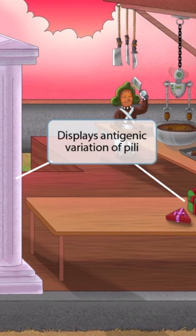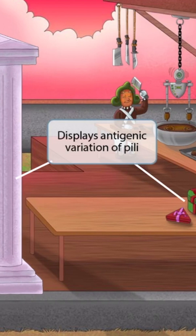Therefore, vaccines against this target are limited and have been ineffective. This is partly why the scientific community has yet to develop a good vaccine for Neisseria gonorrhea. However, other targets have been developed for Neisseria meningitidis, so there is an effective vaccine against this species. We'll talk more about this in the next two videos. For now, just recognize that both species display antigenic variation of pili, and also know that pili play an important role in bacterial movement as well as attachment to host cells.